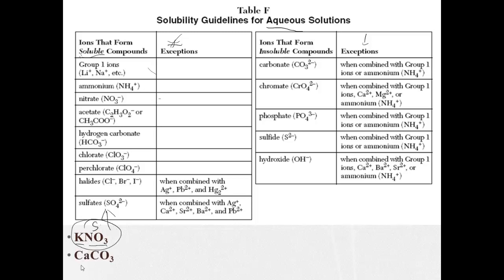Calcium carbonate, CaCO3. Well, calcium is not a group 1, it's a group 2. It doesn't say anything about calcium. What about here, insoluble? Oh, carbonates tend to be insoluble. So the fact that there's a carbonate here tells us it's going to be insoluble. Let's look at the exceptions. When combined with group 1 ions or ammonium. Well, is calcium a group 1? No, it's a group 2. So it's not an exception, meaning calcium carbonate is insoluble.